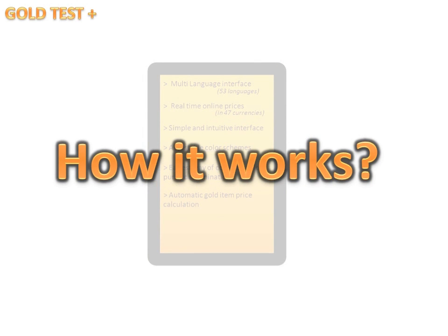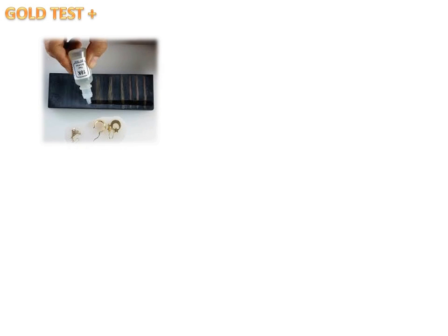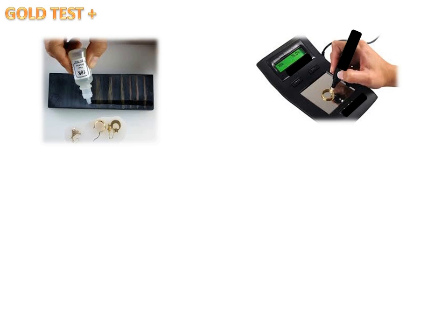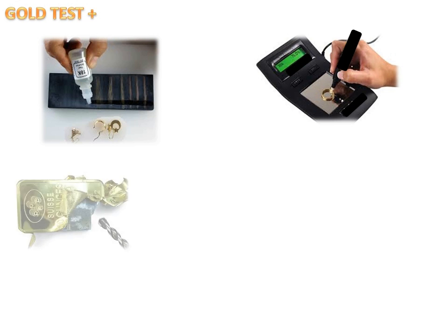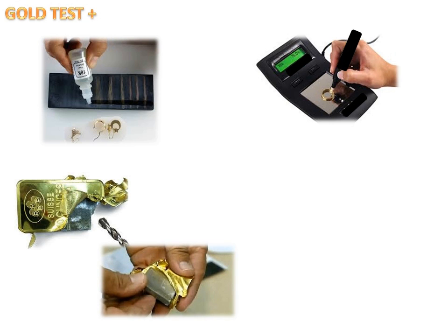So how does it work? You might be familiar with some testing methods, but they will only allow you to check the surface of the golden item. As a result, you may buy fake gold, as shown in these examples.